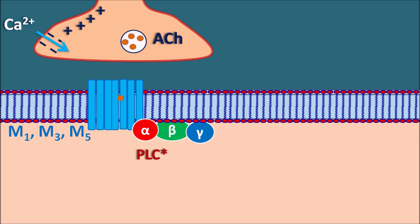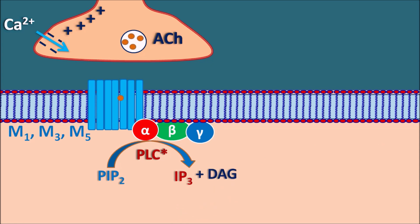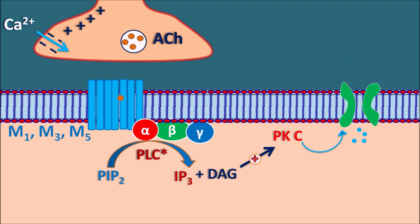When phospholipase C is activated, it cleaves phosphatidylinositol bisphosphate into two components: IP3 (inositol trisphosphate) and DAG (diacylglycerol). Diacylglycerol further activates protein kinase C, which opens inward-going calcium channels, allowing calcium to enter into the postsynaptic membrane.